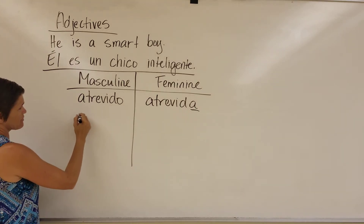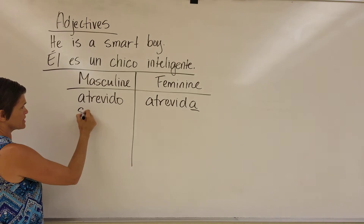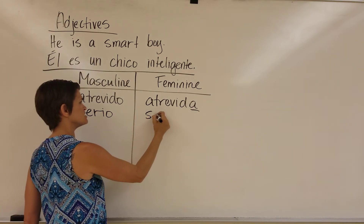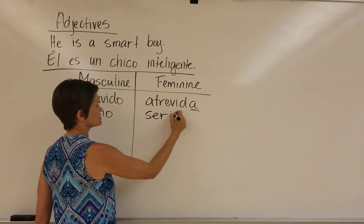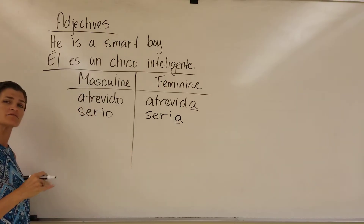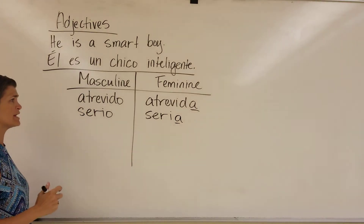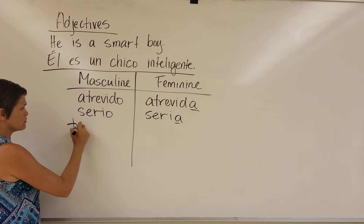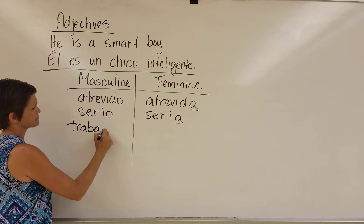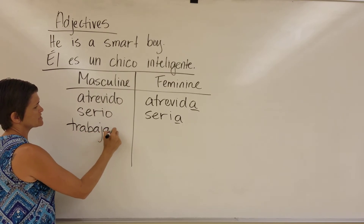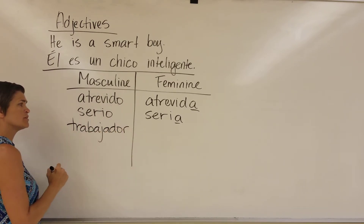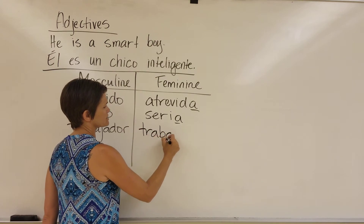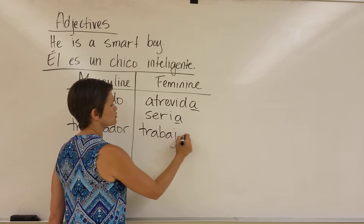If we have a word like 'serio' — he is serious — if she is serious, it's 'seria.' Pretty easy: we change the O to an A. Some of them are not as simple though. 'Hard working' is 'trabajador,' and the feminine form of that is 'trabajadora.'